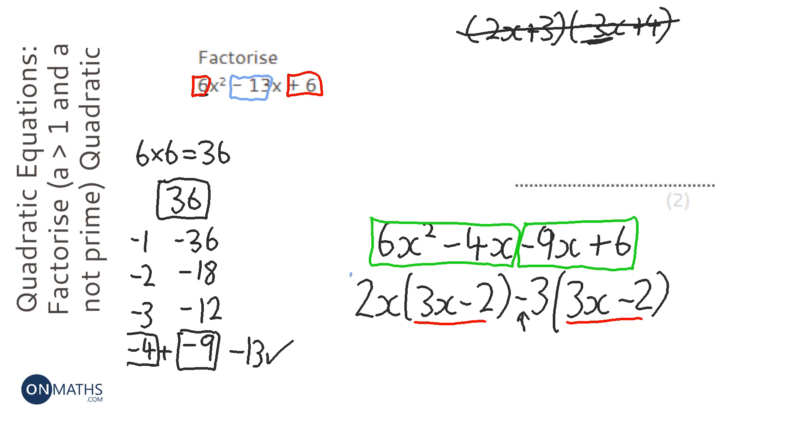OK. The next step is to look at the two numbers on the outside of the brackets and put them together in their own brackets, the 2x and the minus 3. And then just put the repeated bracket, that 3x minus 2, as the second bracket. And that's it.